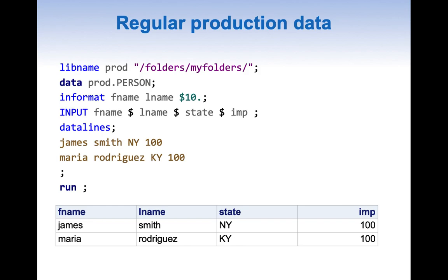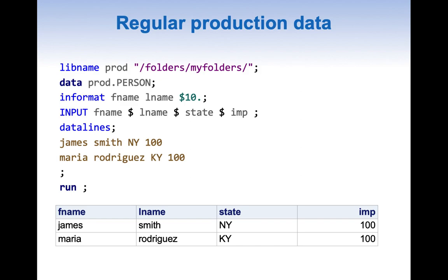This production table is created once and I am showing this table creation just for illustration purpose. In this code the emphasis is more on the input statement. An input statement is very important because it allows us to do a lot of modifications. The main significance of reading the data in a data step rather than proc import is we can manipulate so many things — we can define lengths, tell which variable is character, which is numeric, and so forth. Proc import doesn't give that kind of flexibility.